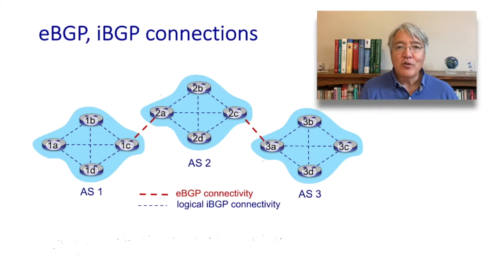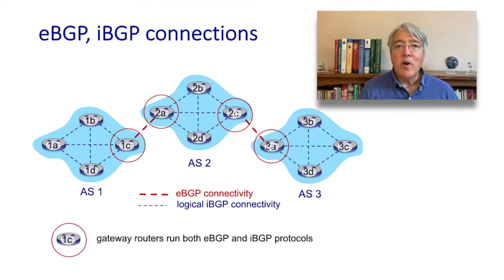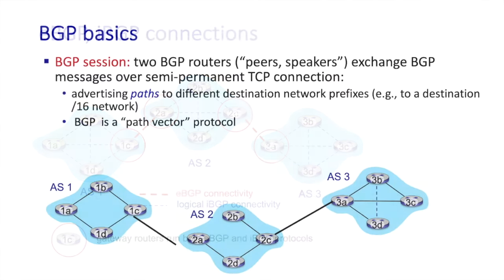This figure shows the two flavors of BGP. EBGP runs between two routers that are in different autonomous systems. IBGP runs between two routers that are within the same autonomous system. Gateway routers run both EBGP and IBGP. BGP peers, sometimes called BGP speakers, exchange BGP messages over semi-permanent TCP connections using port 179.